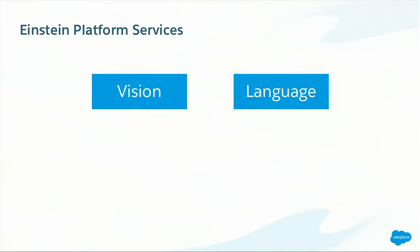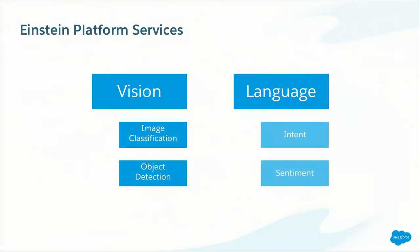Before we start, a quick overview of both services that are available. First, we have Vision — everything we provide around image classification and object detection. The second is Language, which covers text intent and text sentiment.